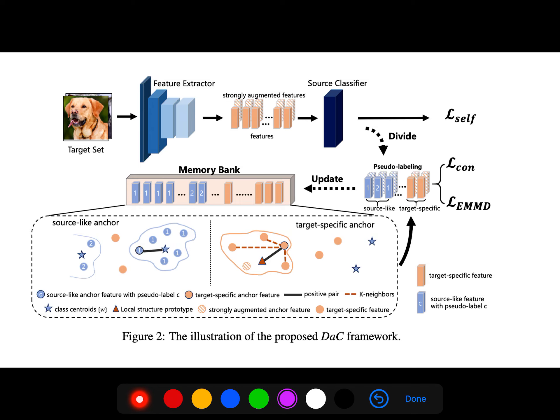This is the illustration of the proposed DaC. First, they give input to the feature extractor. With these features and strongly augmented features, you feed them to the source classifier. We have three losses: the contrastive loss and MMD (maximum mean discrepancy). We understand that some samples are source-like and some are target-specific. Then we update our memory bank, and we have class centroids.